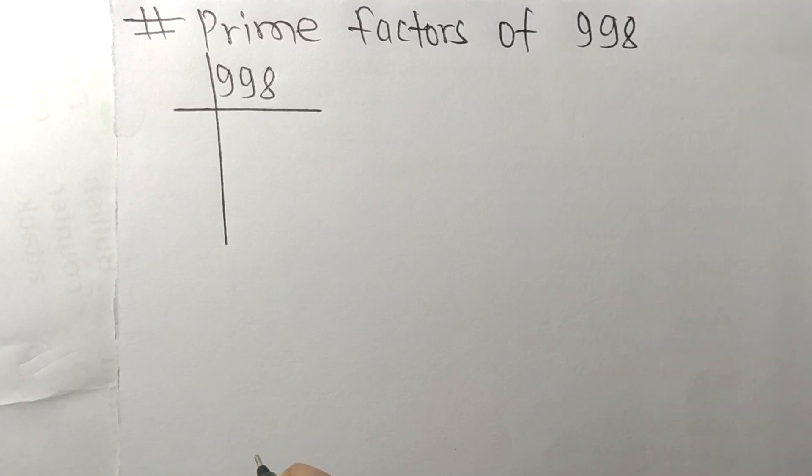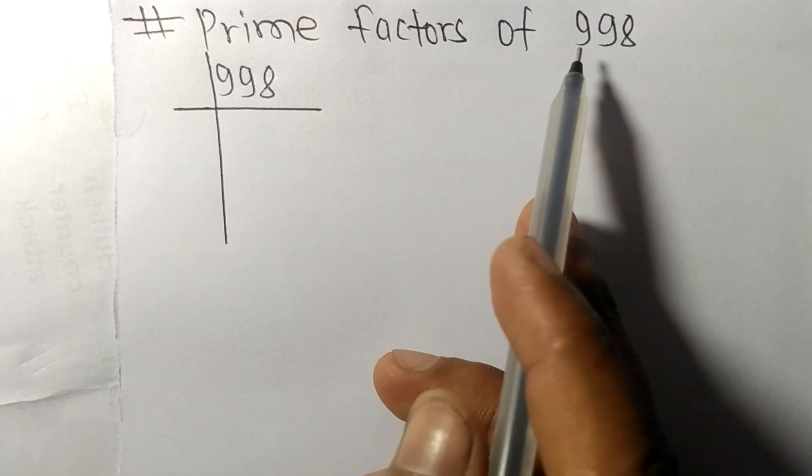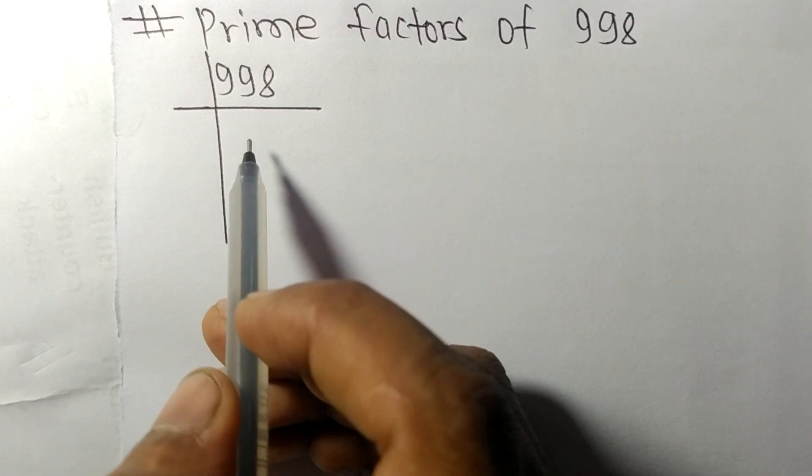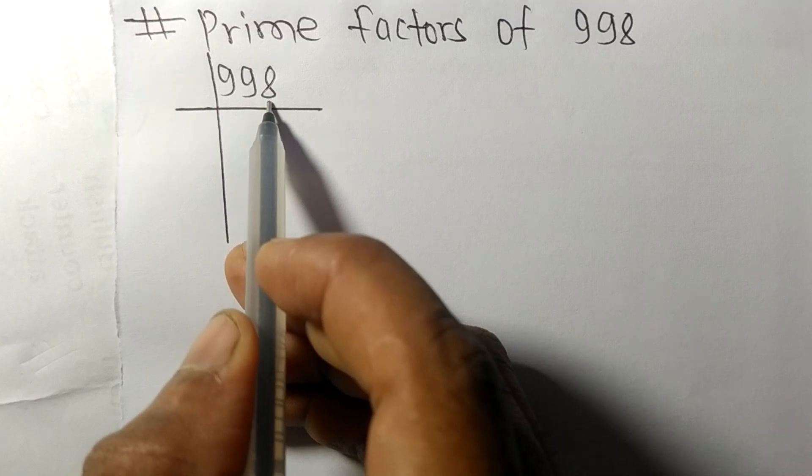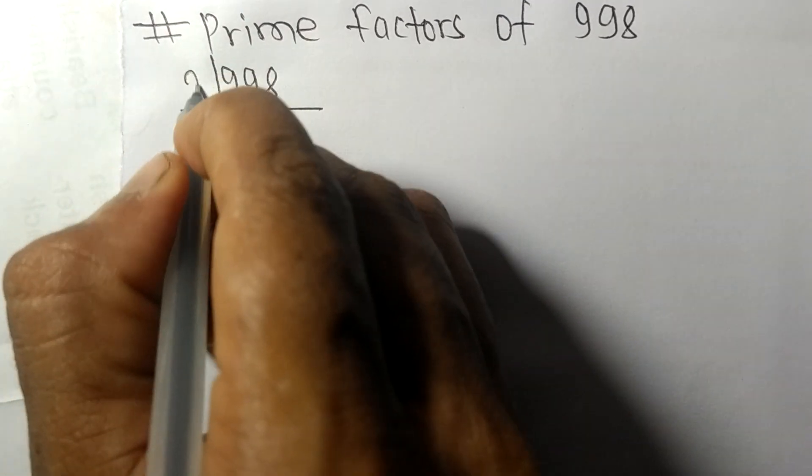Today in this video, we shall learn to find the prime factors of 998. It contains an even number, 8, at the end, so this whole number is divisible by 2.